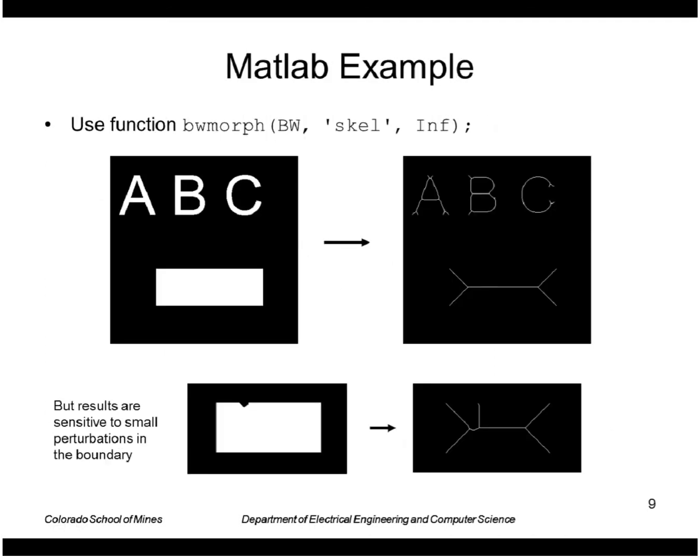For example representing the shapes of letters. We show a binary image of letters here. This is the skeleton of that. And here's another skeleton for this rectangular shape here. One disadvantage of this representation is it's sensitive to small perturbations of the boundary. So here I've nicked the rectangle by a small amount and that causes this additional segment right here.